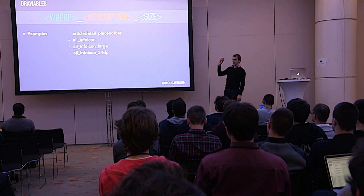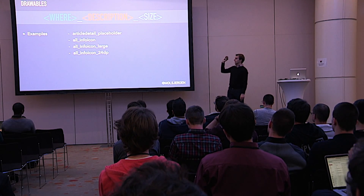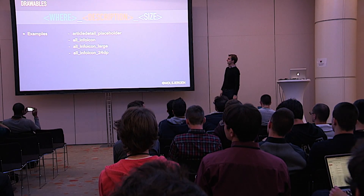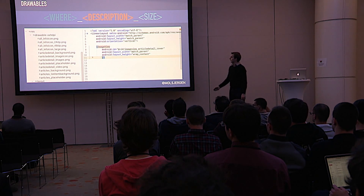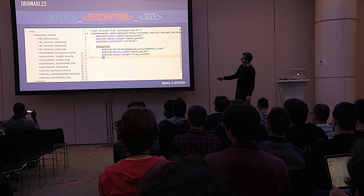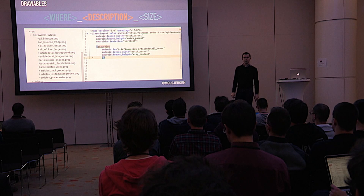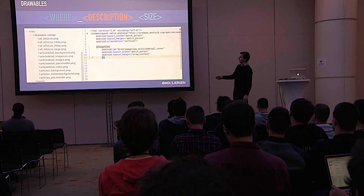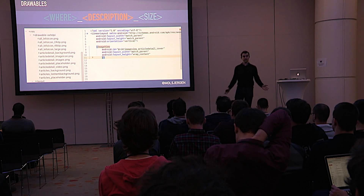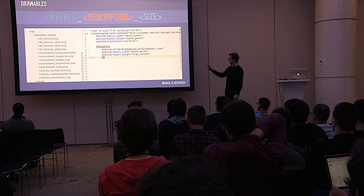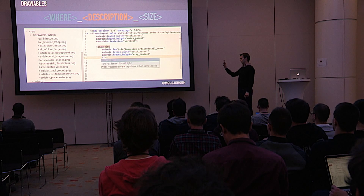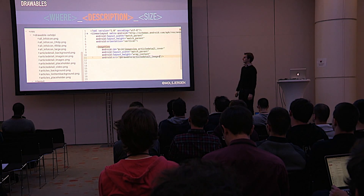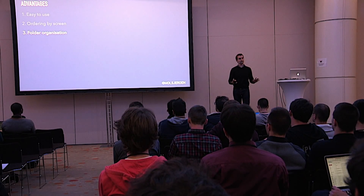For drawables, it's exactly the same as for strings, only here we also have the size. So you could say it's the info icon for all screens, but it's the small or large version, or the info icon with exactly so many DPs. Applying this, a second benefit comes up: all of your resources in the drawable folder are going to be nicely grouped by screen. And it gets even better, because all resources that you generically reuse across your application — which you need the most — are going to be on top of the folder. So this simple rule also organizes your folders. Third advantage: your folders are going to get nicely organized.